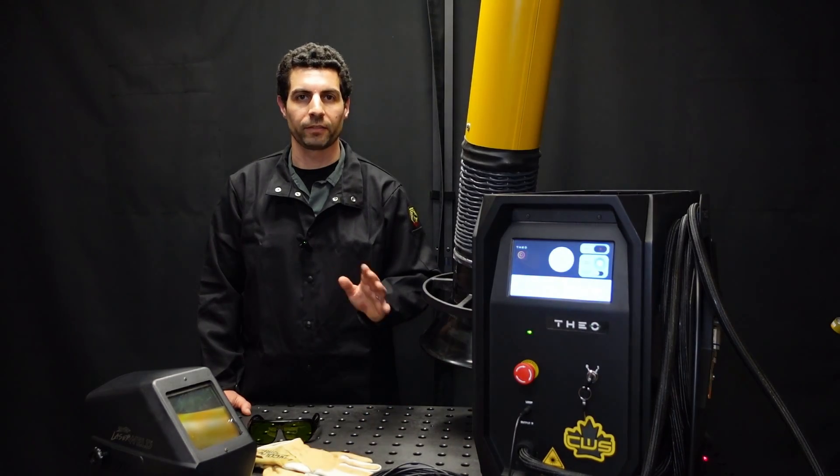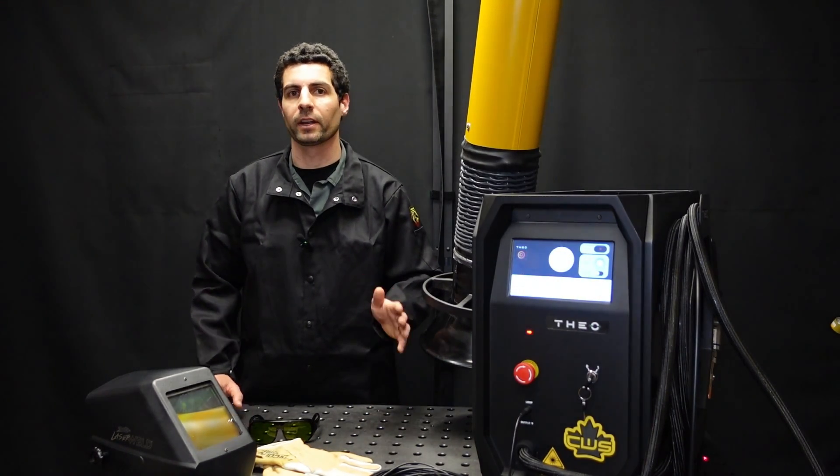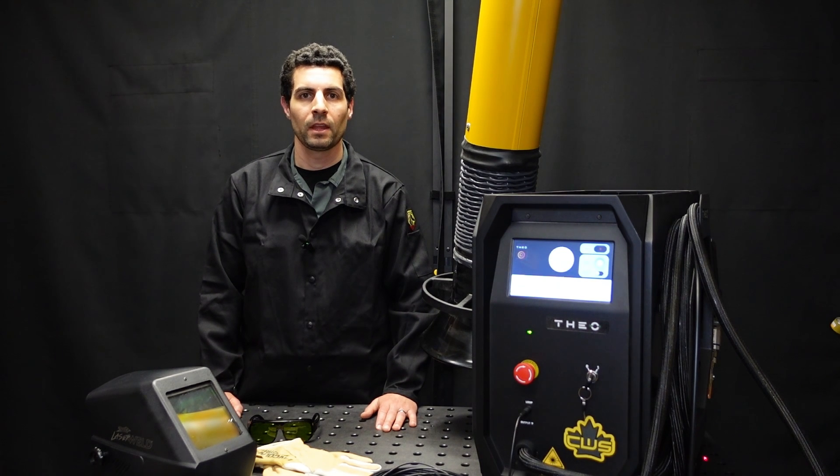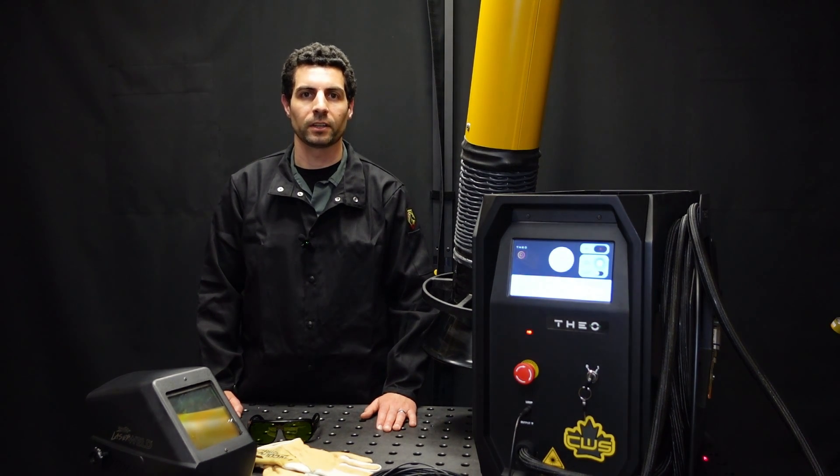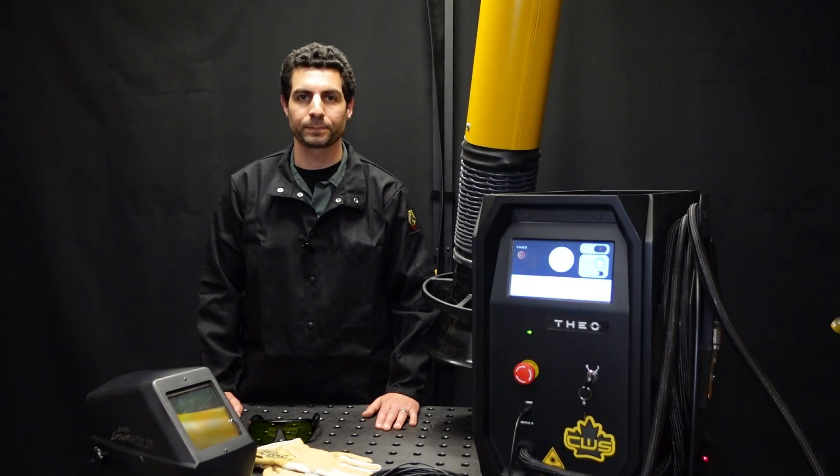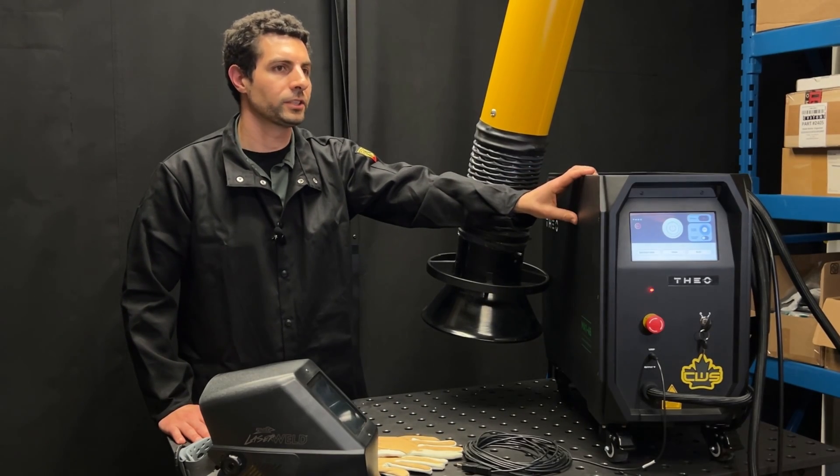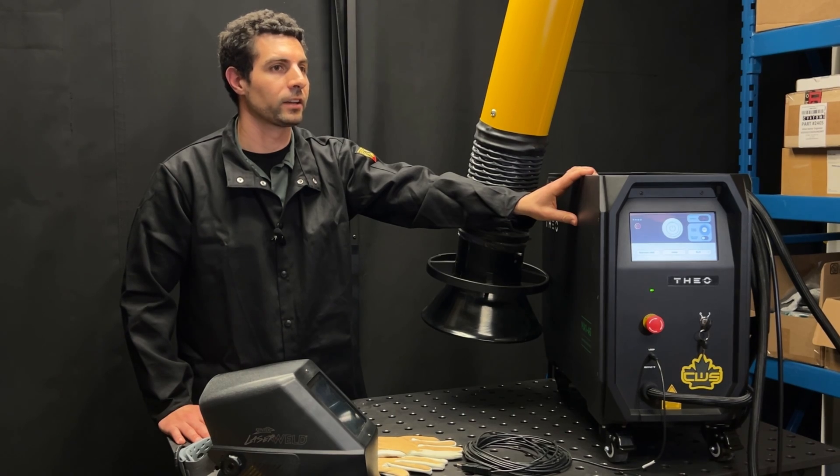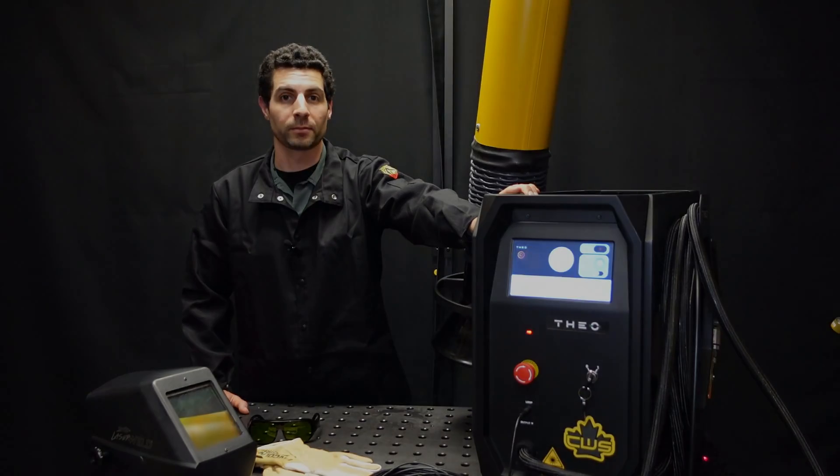Production time is significantly faster, anywhere from 4 to 10 times quicker depending on the exact application. And the level of skill involved in producing an aesthetically pleasing weld is much, much lower. So it's much easier to get someone trained and up and running on this machine than it would be for TIG welding. If you're welding thin gauge steels and you haven't taken a look at handheld laser welders yet, it's time to take a look.